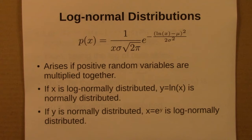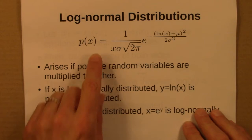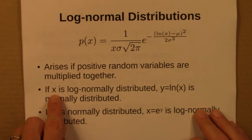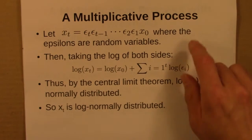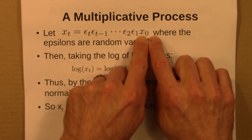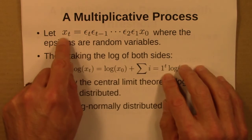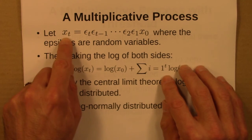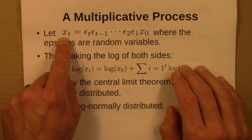Then I talked about log-normal distributions and multiplicative processes. A reminder: if x is log-normally distributed, then the log of x is normally distributed. We considered a simple multiplicative process: we start with some x0 and multiply a string of random variables epsilon together, ending up with a random variable at time t. The question is, after multiplying a bunch of these random numbers together, what do we get?